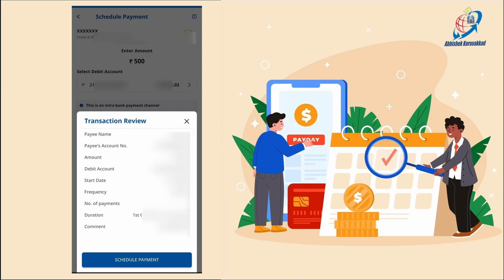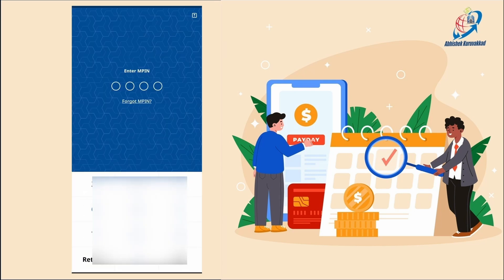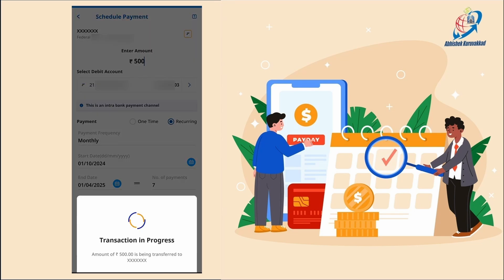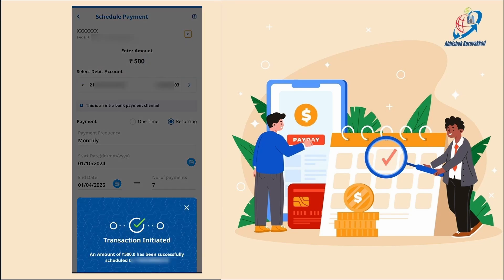If you are okay, you can click the Schedule Payment button and then click the Proceed button. Now we will enter the M-PIN screen. You will enter your M-PIN and the transaction will be initiated. The amount of 500 has been successfully scheduled to the account. The account number has been given.